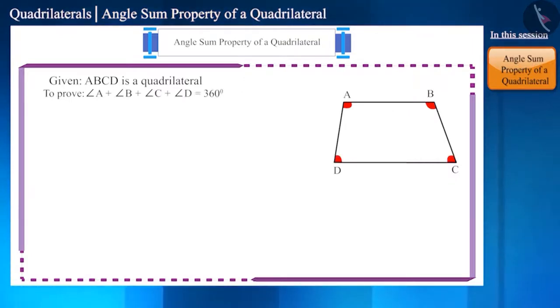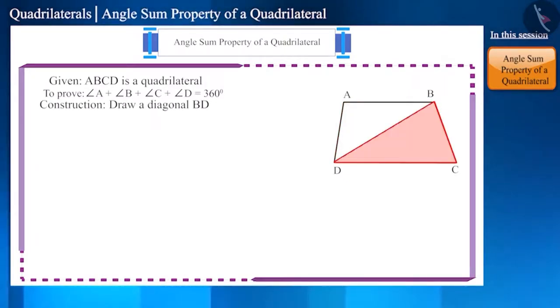Now by drawing a diagonal of this quadrilateral, let's divide this quadrilateral into two triangles. You can create either one of the diagonals AC or BD. Now we have two triangles: triangle BCD and triangle DAB.